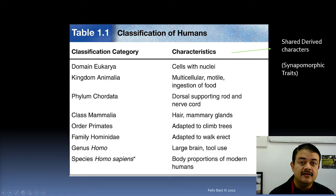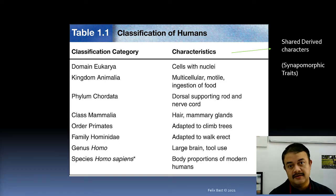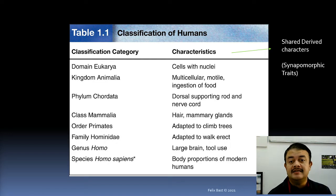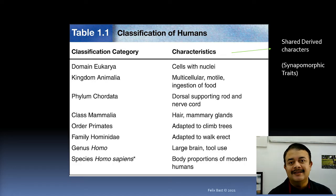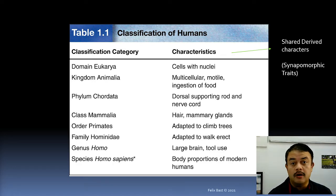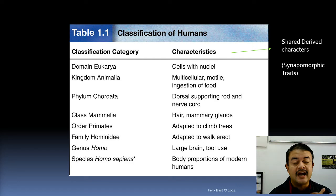These shared derived characters are called synapomorphic characters, which are really important. They are homologous characters. Because we define these categories based on synapomorphic traits, they represent natural systems. The characters must be shared and derived — not ancestral. Plesiomorphic or symplesiomorphic characters are ancestral ones.